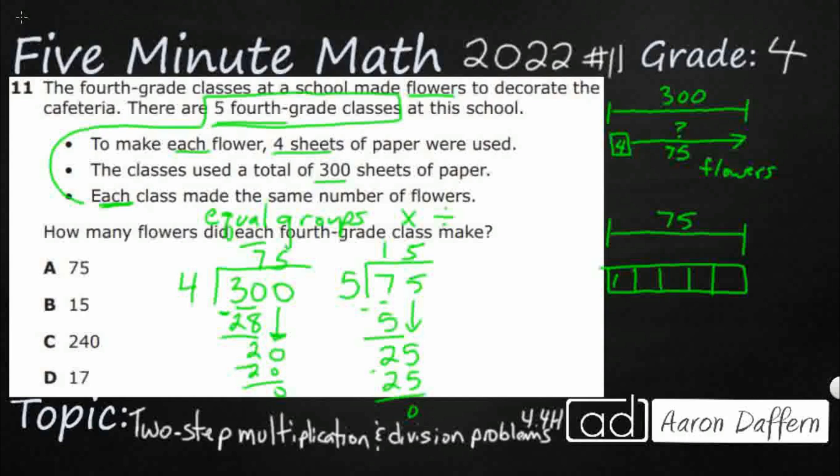But that's a lot of dividing. Let's make sure that I did this correctly. All right, so if I've got five classes and each class made 15 flowers, that's going to be five times 15. So I've got 75 flowers, which is what I had right here.